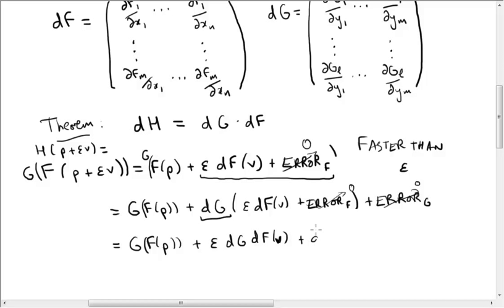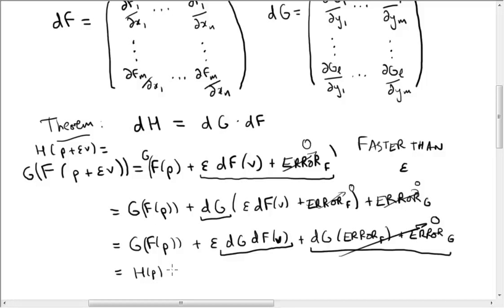And then we get plus dg times the error in f plus the error in g. But both of these terms still go to zero faster than epsilon, which means that what's left over here is precisely the derivative of h. Because if we write out the Taylor expansion of h, this is h of p plus epsilon dh of v plus the error in h.